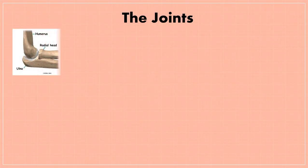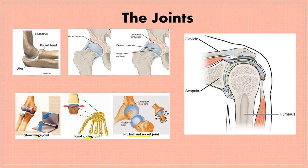The skeleton can bend and move because of the joints. Joints are the places where two bones are joined together. The bones and joints are held together by strong, stretchy bands called ligaments. There are different types of joints that allow different types of movements. Some of them are hinge joints, the ball and socket joint, the pivot joint, and the gliding joint.